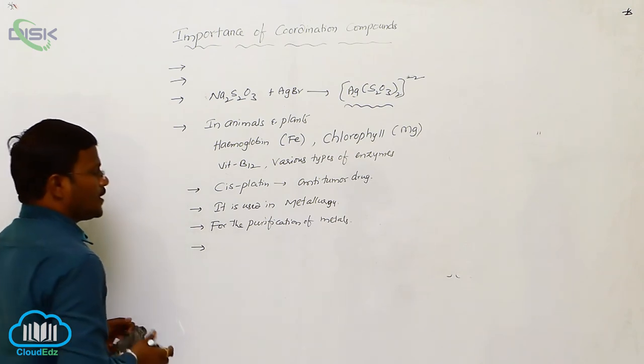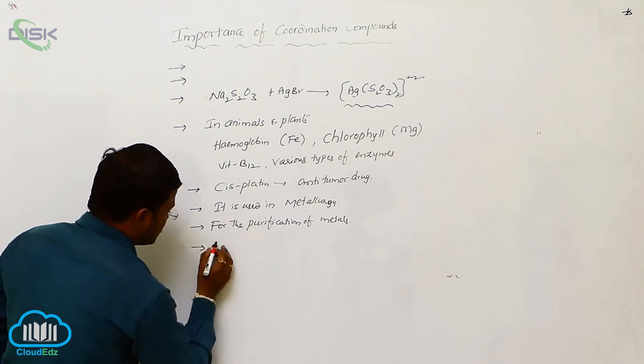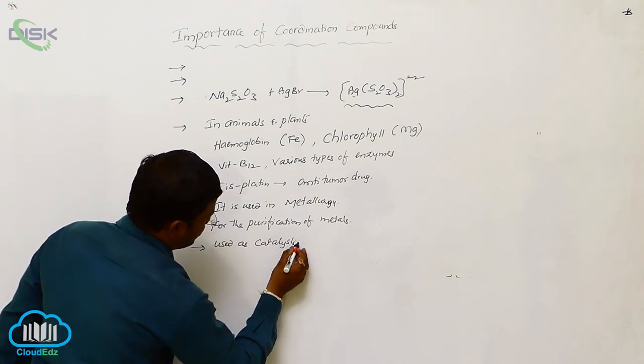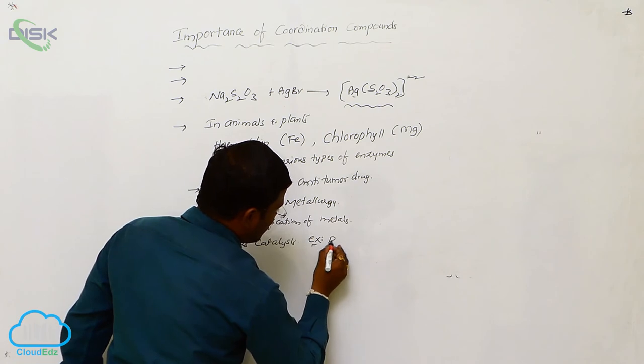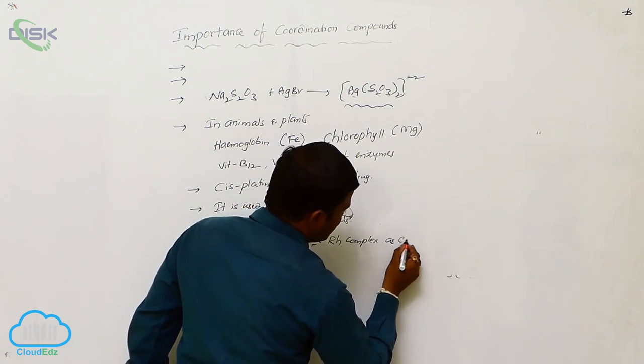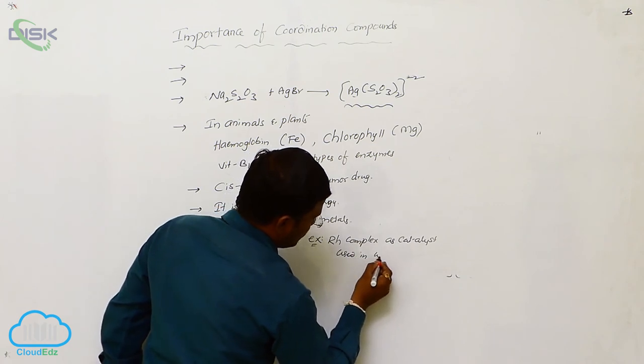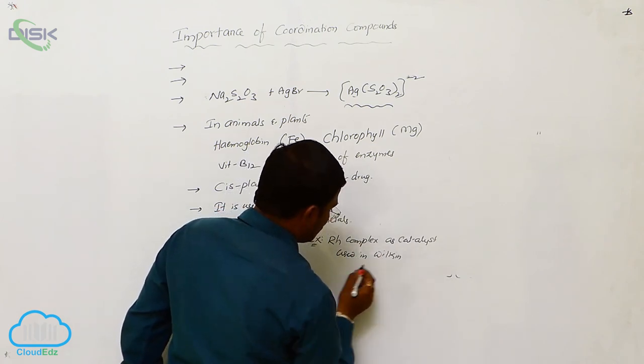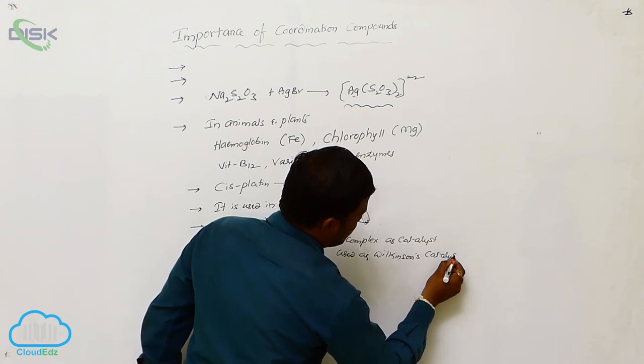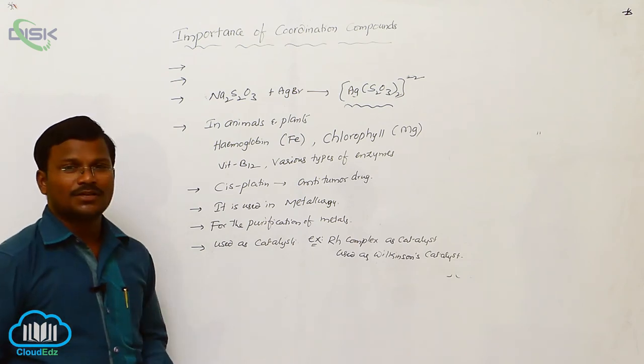And one more important one is, some of the coordination complexes are used as catalysts. For example, rhodium complex, rhodium complex as catalysts used in Wilkinson's catalyst for stereoselective hydrogenation of double bond. So, this is about coordination compounds.